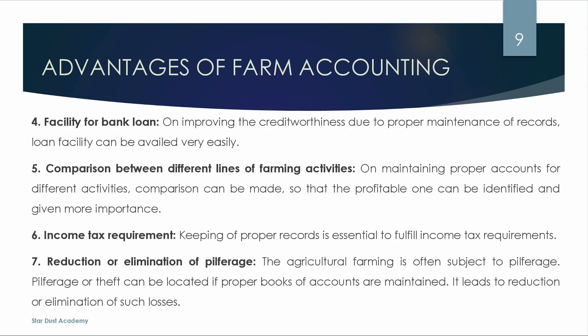Next is facility for bank loans — with proper financial records and books of accounts, we can get credit worthiness and bank loans more easily. Next is comparison between different lines of farming activities — we compare cost and profitability and identify profitable items.